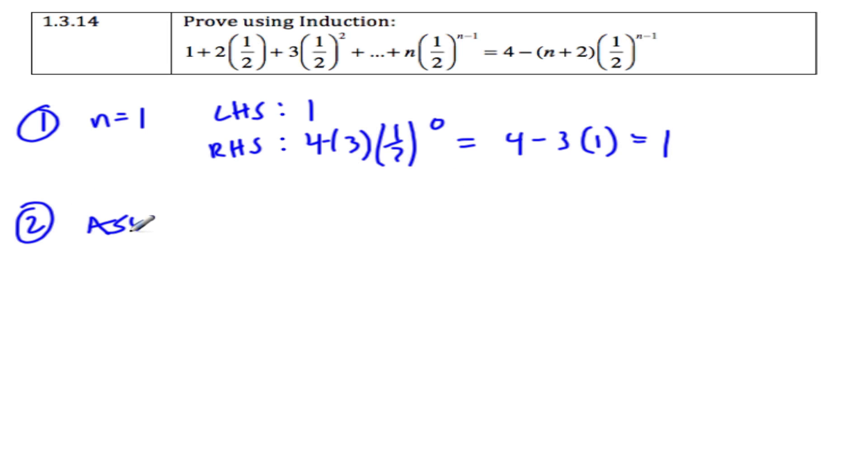Step number 2, assume true for n equals k. So we have 1 plus 2 times 1 half plus 3 times 1 half squared plus all the way out to k times 1 half to the k minus 1.